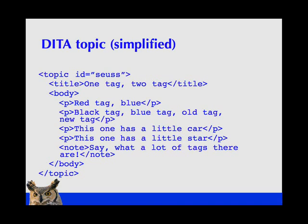I wanted to give you an example of what a topic looks like, just to see whether you can in fact read the topics. This is a simplified DITA topic. You'll notice that there is a topic element at the top, and then inside that we have a title element — that would be the title of this particular topic. There is a body section, and inside that we have a bunch of P-tags and a note. So it's human-readable, and you can see how it's organized with a topic, a title, and then the body.